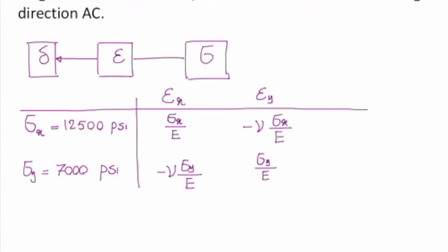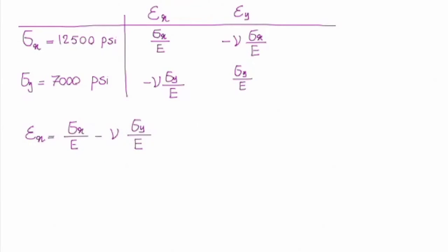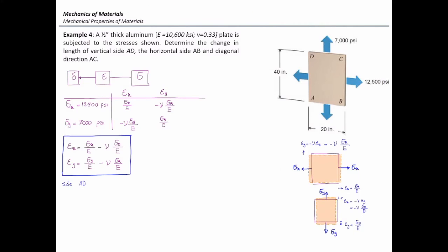Now, can you tell me how much is the total Epsilon X? Because of Sigma X and Sigma Y. I need to add everything in the second column. So Epsilon X would be Sigma X over E minus ν Sigma Y over E. The same is true for Epsilon Y. That would be Sigma Y over E minus ν Sigma X over E. So now let me use this generalized Hooke's law here.